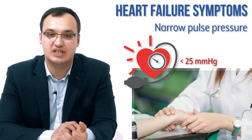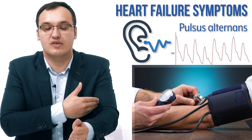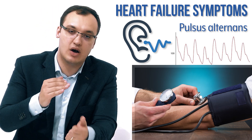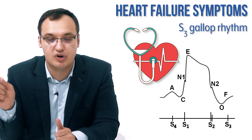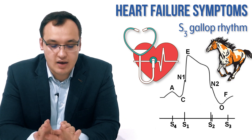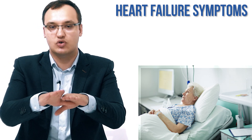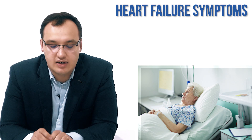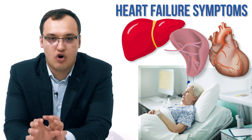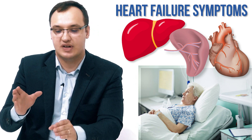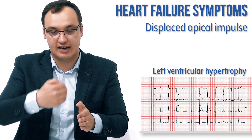I also see pulsus alternans: when I compress with the blood pressure cuff and auscultate, I hear a strong sound and then a very weak sound alternating. I also auscultate the heart and hear the S3 gallop rhythm — like a horse galloping. The patient is very fatigued and cannot lay down — this is called orthopnea — with difficulty breathing when lying down. I palpate the liver and it's very enlarged; the spleen is enlarged; the heart is enlarged. The apical pulse is directed to the left, lateral to the mid-clavicular line.